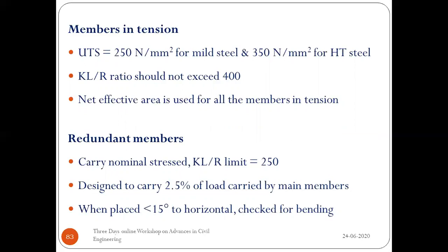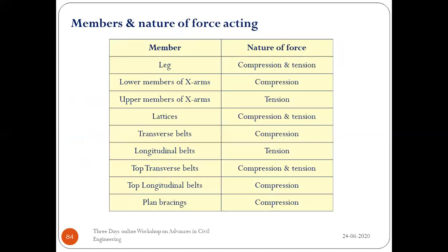Members inclined less than 15 degrees must be checked for bending as people climb over the tower during maintenance. Regarding member forces: legs are in both compression and tension; lower cross arm members are normally in compression; upper cross arm members are in tension; lattices have both; top transverse belts are in compression and tension; longitudinal belts, plan bracings, and transverse belts are normally in tension.